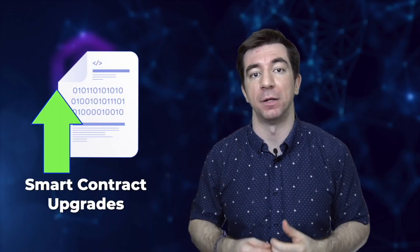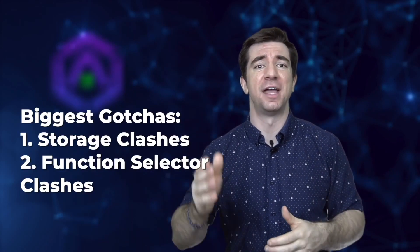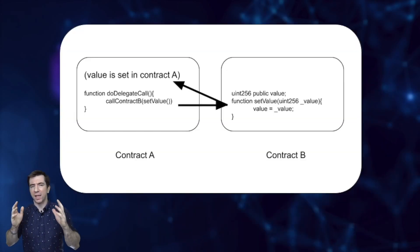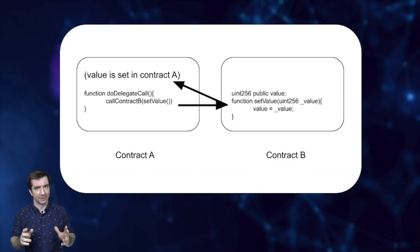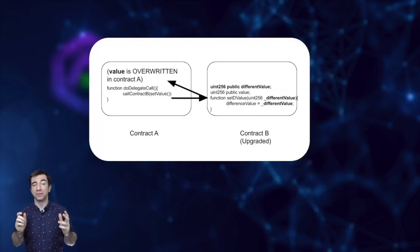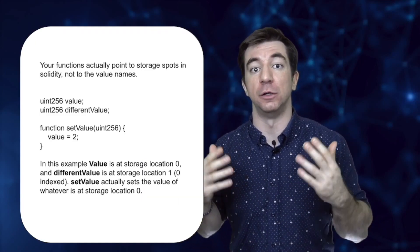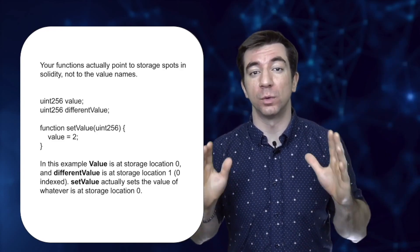Using proxies has gotchas, and this is why Trail of Bits doesn't really recommend upgradable proxies — they're fraught with potential issues, and you still have some type of admin upgrading your contracts. The two biggest gotchas are storage clashes and function selector clashes. With delegate call, we set the value of whatever is in the same storage location on contract A as contract B. This means we can only append new storage variables in new implementation contracts — we can't reorder or change old ones. This is called storage clashing.